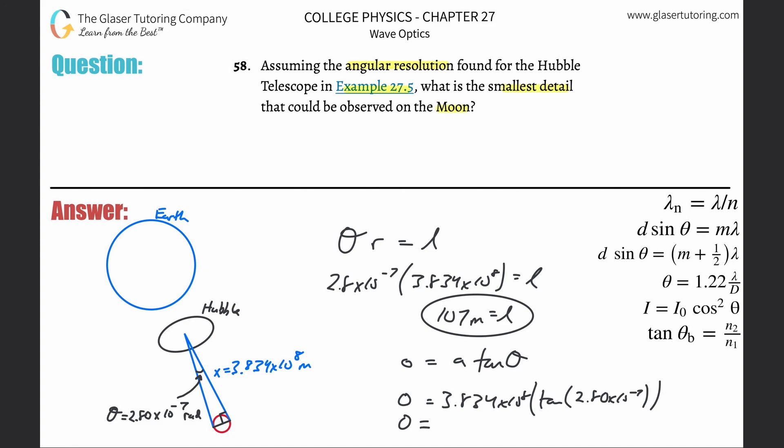So this is going to be 3.834 times 10 to the 8th, multiply them by tangent of 2.8 times 10 to the minus 7th. And what do you get?